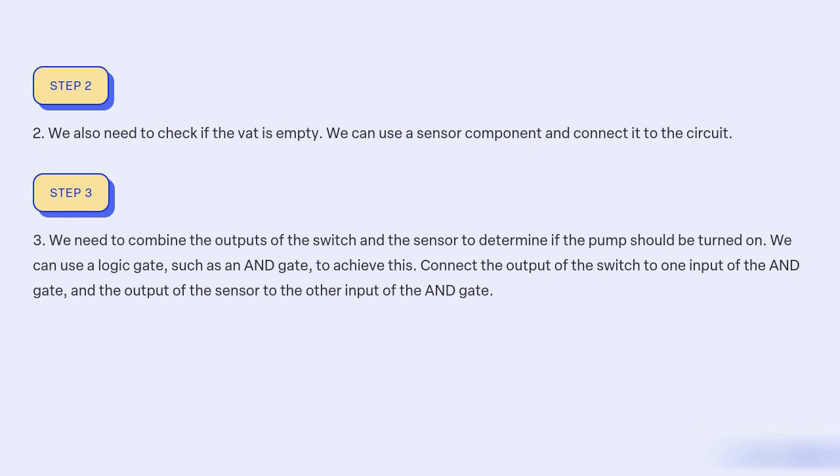Step 3: We need to combine the outputs of the switch and the sensor to determine if the pump should be turned on. We can use a logic gate, such as an AND gate, to achieve this.